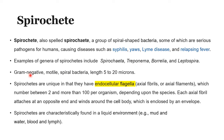Spirochetes are mainly gram-negative. They are motile and they are spiral in shape with a length of 5 to 20 microns. Spirochetes are unique in that they have endocellular flagella. The flagella is completely in the middle of the structure of a Spirochete, and it is called an axial fibril or axial filament.